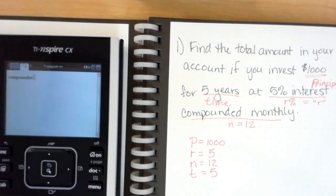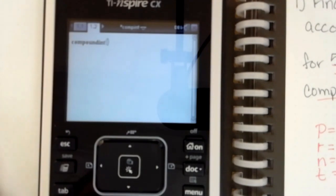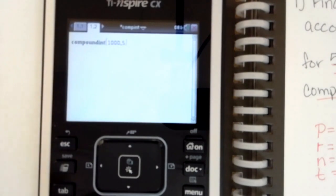So on our calculator we're going to type in one thousand comma five comma 12 comma five.